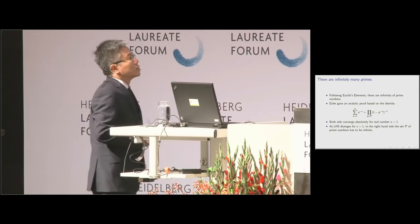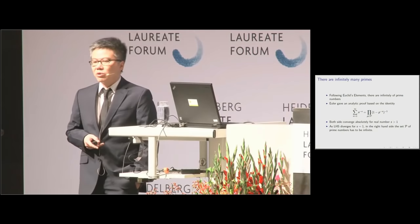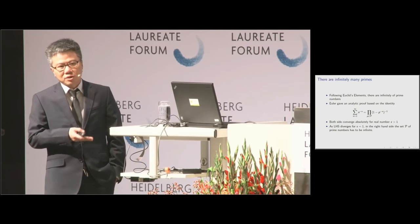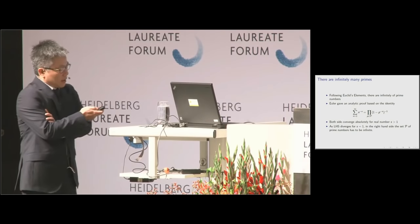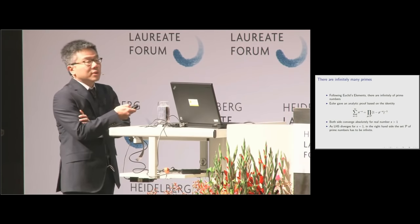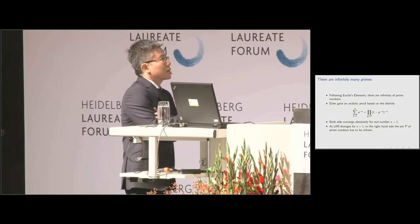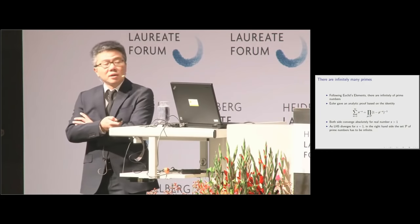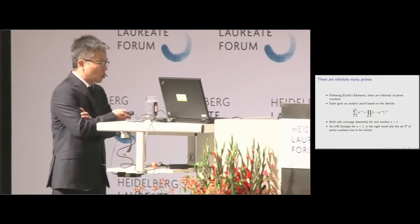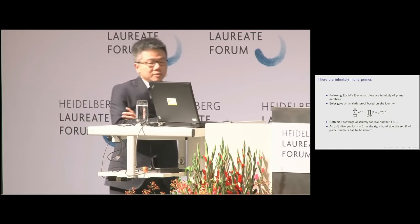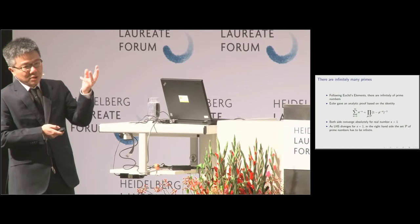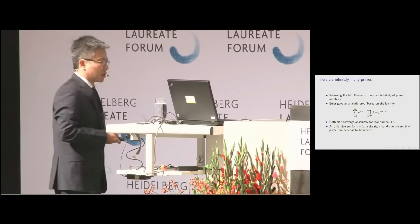Euler considered this series — a sum of n to the minus s — as a function of the real variable s. Of course, this series only converges for real s greater than 1; it diverges at s=1, since the harmonic series diverges. But what's really interesting is it has this factorization: on the left-hand side is a series, and on the right-hand side is an infinite product over the prime numbers. You have this expression because of the unique factorization of integers — every integer can be factorized in a unique way as a product of primes. That fundamental property of arithmetic can be encapsulated in this single identity: it's an analytic expression of the fundamental theorem of arithmetic.